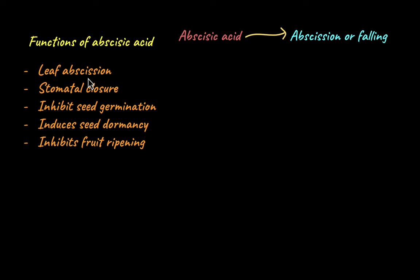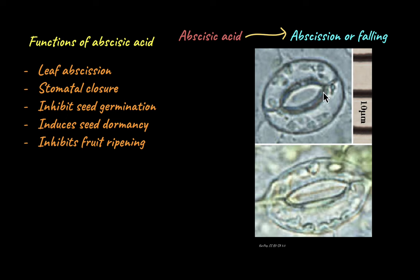Apart from being involved in the abscission of leaves, abscisic acid is also involved in the closing of stomata. Here you can see an open stomata and a closed stomata. The stomata is the opening through which transpiration or water loss occurs. Under drought conditions where there is less availability of water, transpiration could further damage the plant. So under such extreme drought conditions, abscisic acid production increases and it closes the stomata, reducing or preventing water loss through transpiration.